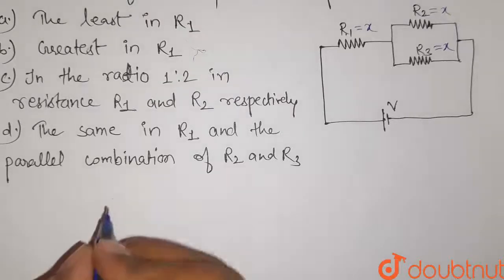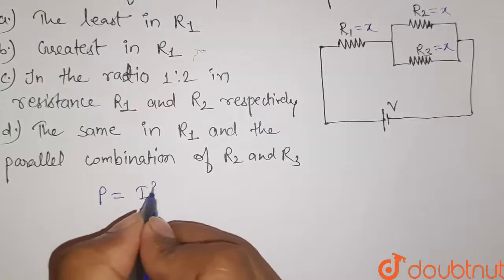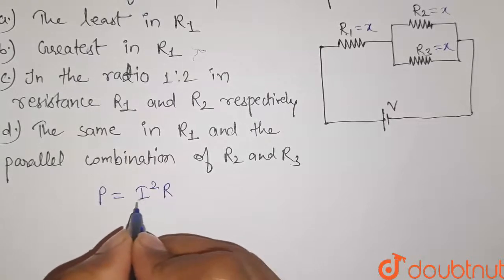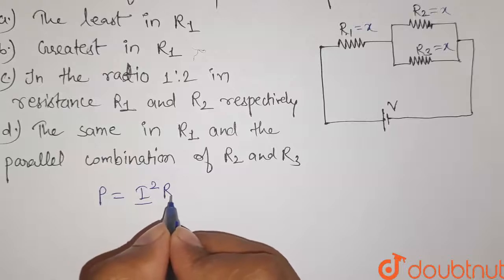The formula for power dissipation across resistance is given by I squared into R. Here I is the current flowing through resistor and R is the resistance.